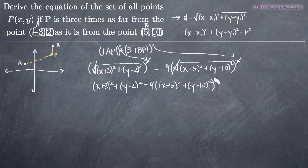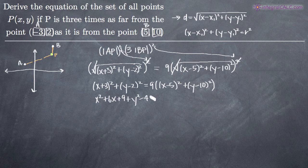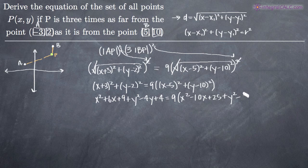Now we want to multiply everything out on both sides, combining all variables and constants onto one side and setting this equal to zero. On the left, we'll have x squared plus six x plus nine plus y squared minus four y plus four. On the right, we'll end up with nine times x squared minus ten x plus twenty-five plus y squared minus twenty y plus one hundred.